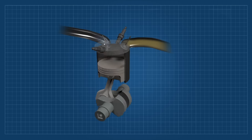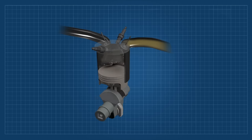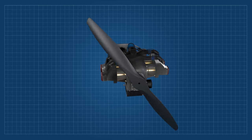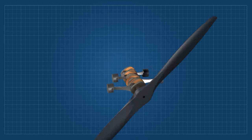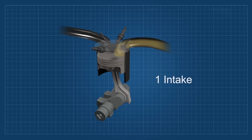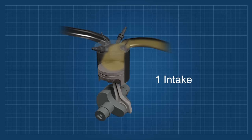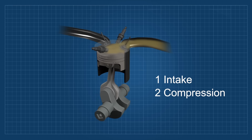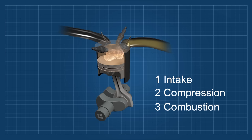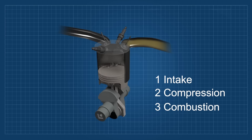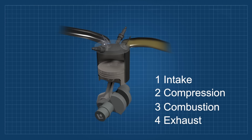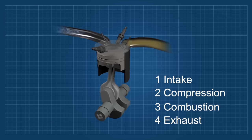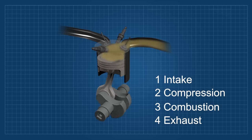If you don't know how an engine works, I'll show you with this animation. Normally we'll find four-stroke engines in airplanes, meaning the cycle has four stages to complete. The mixture of fuel and air goes into the cylinder, then the intake valve closes. The piston goes up and compresses this mixture — that's the compression stage. From there, the spark plug ignites the mixture, and the combustion generates a small explosion that pushes the piston down. That is the combustion stage, where the power is generated. The last stage is the exhaust, in which the exhaust valve opens and the residual gases exit the cylinder. Then the process repeats.